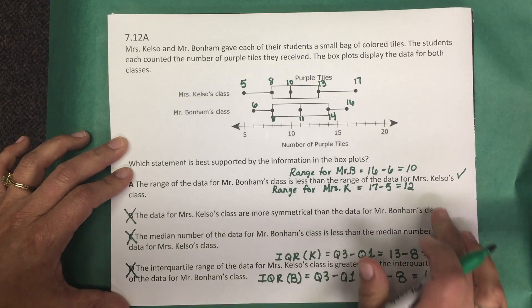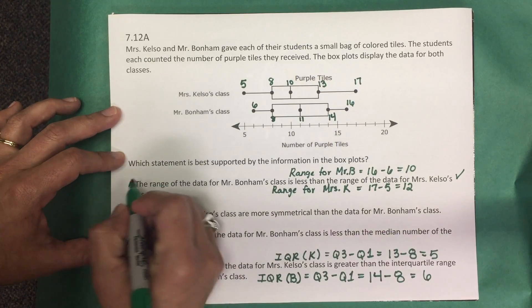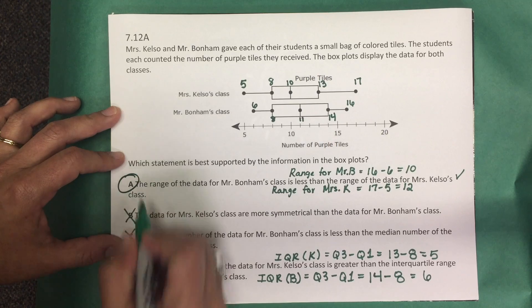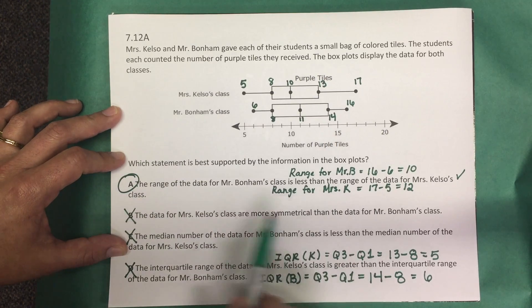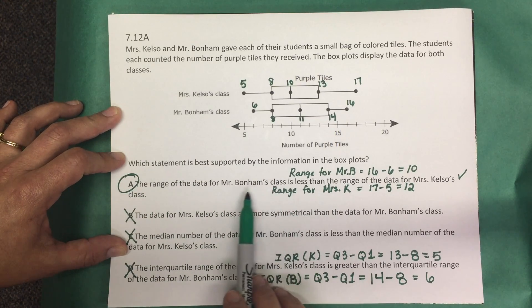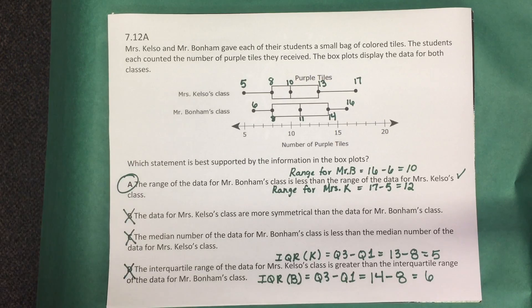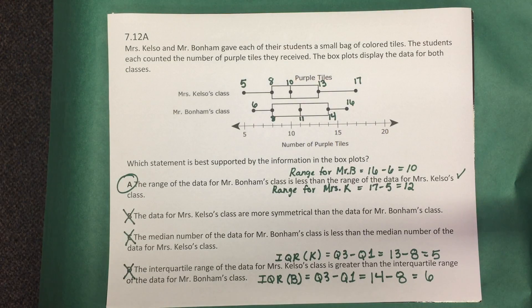So the correct answer for this problem is A — the range of data from Mr. Bonham's class is less than the range of data from Mrs. Kelso's class.